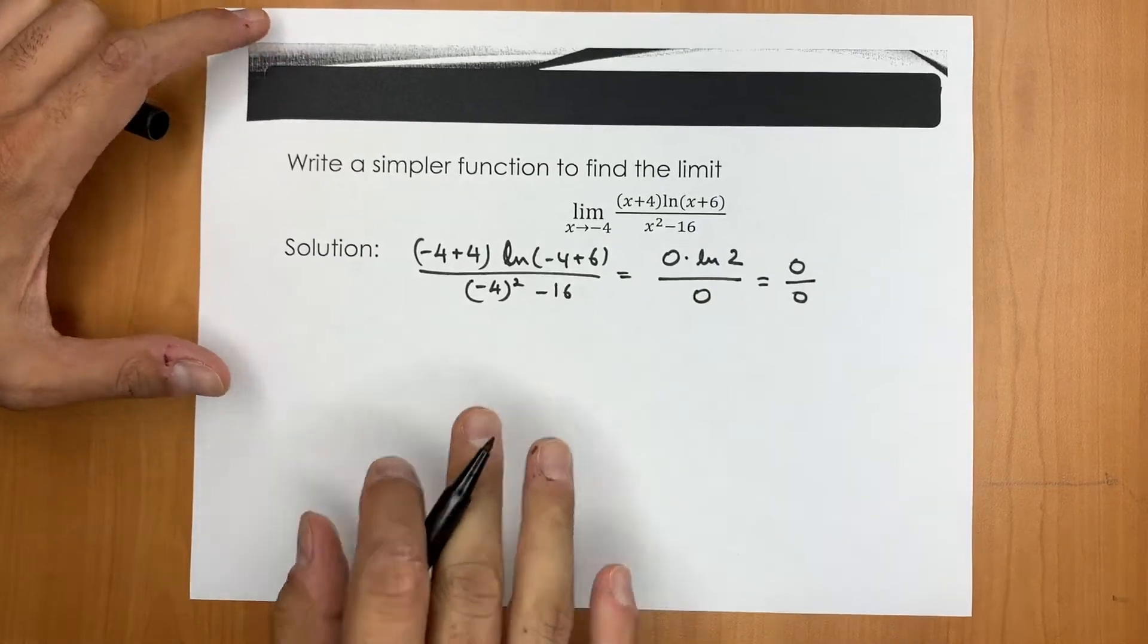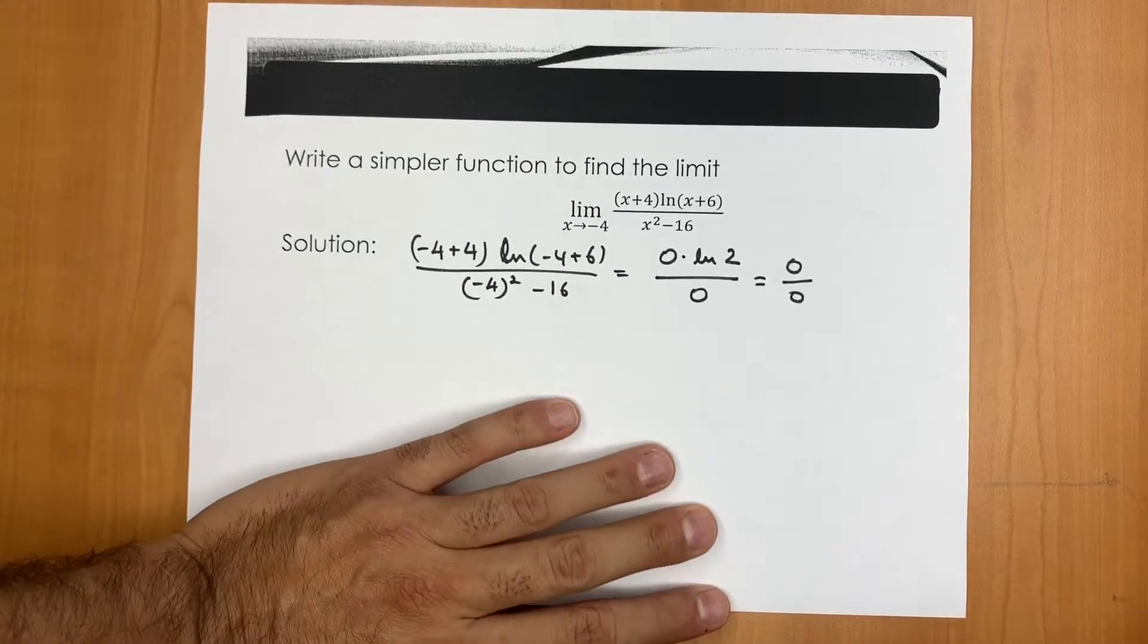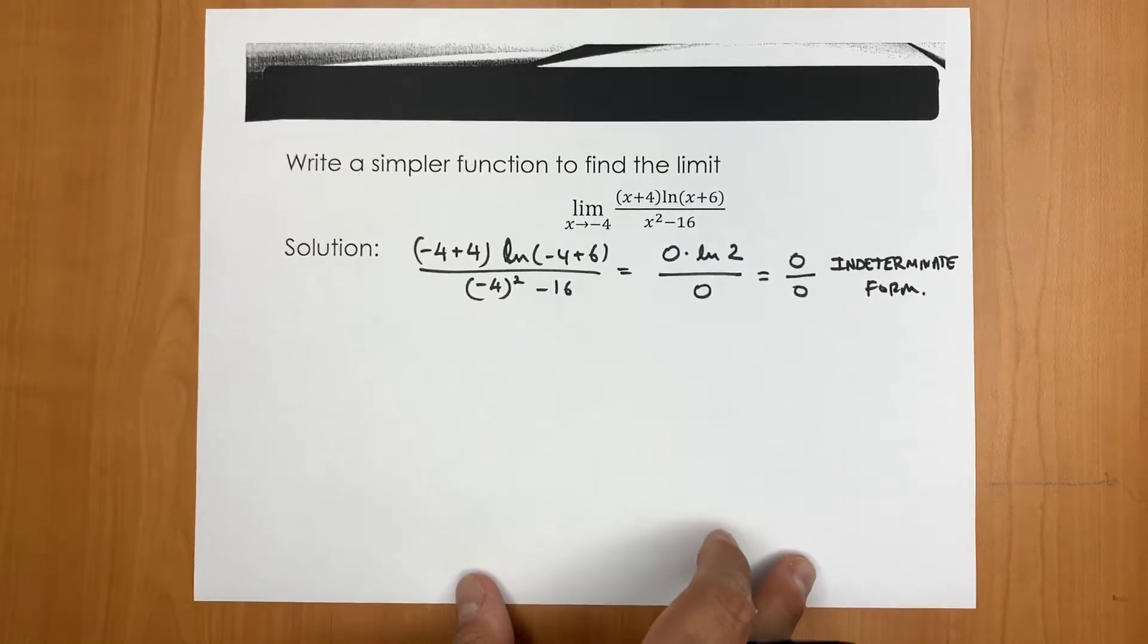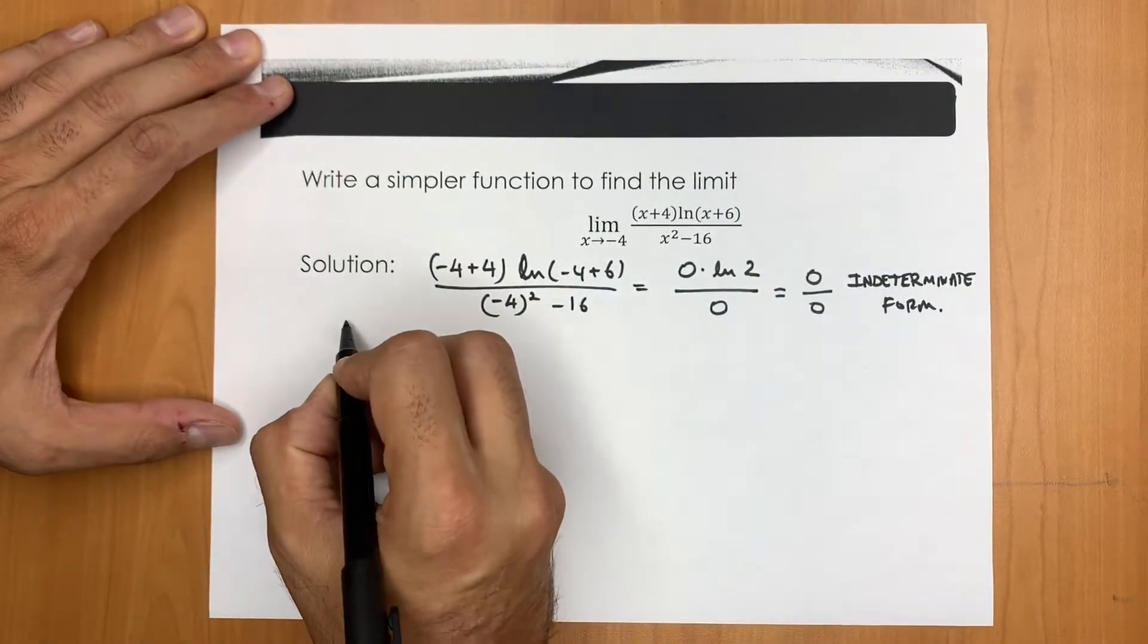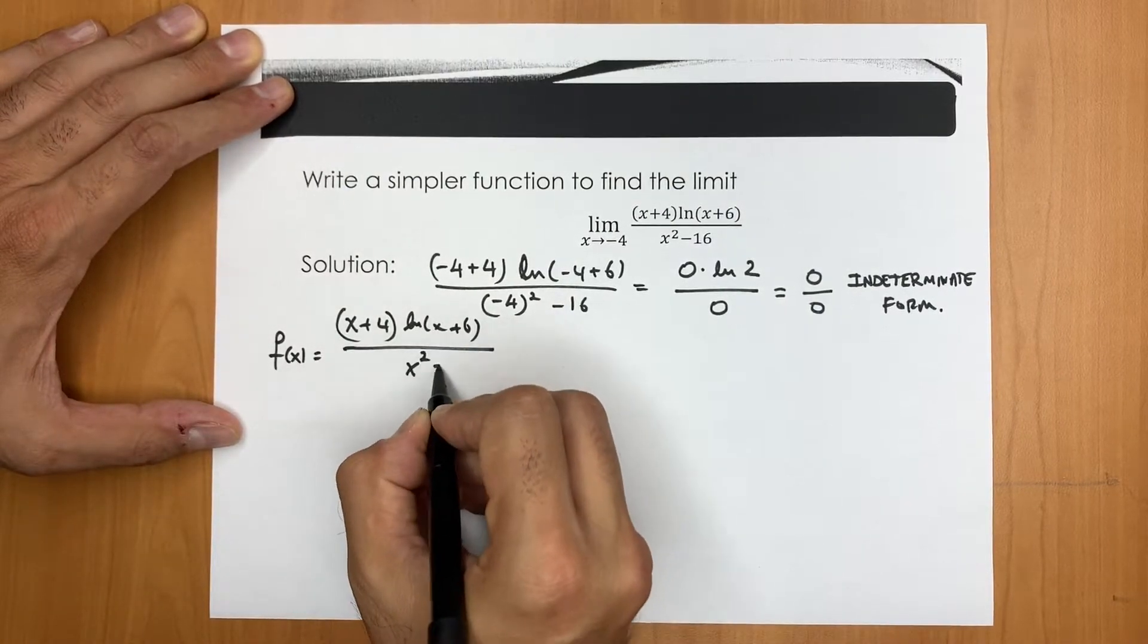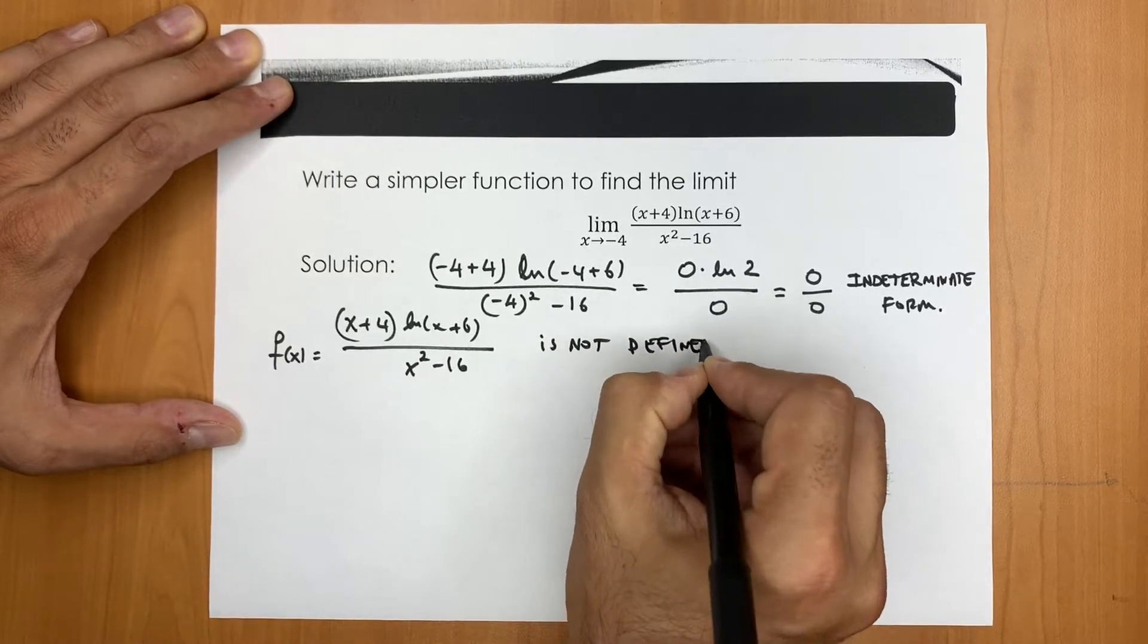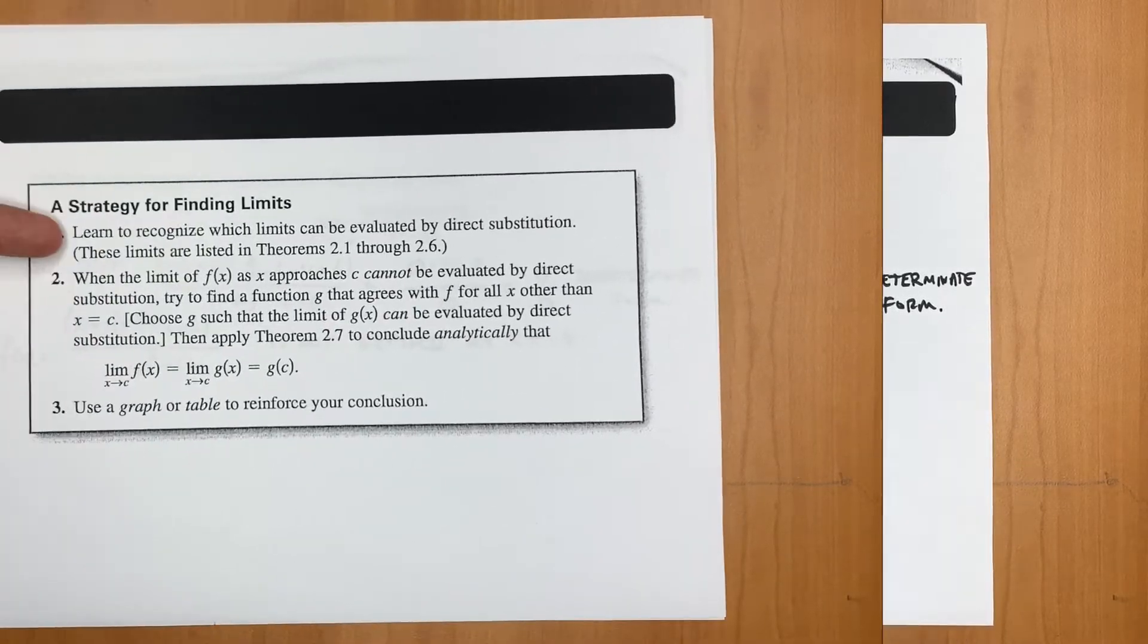So we end up having 0 over 0 and we call 0 over 0 an indeterminate form. Once we have 0 over 0 as the function value after the direct substitution, you may conclude that the function here is not defined. Let me call it f is not defined at the limit point. Well, direct substitution didn't work out.